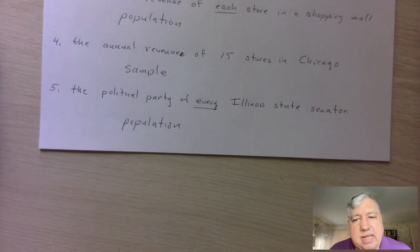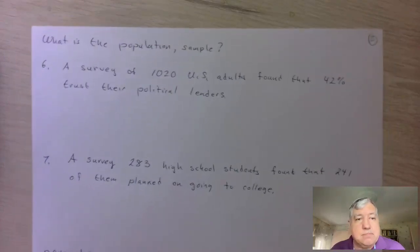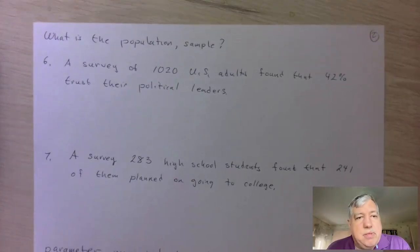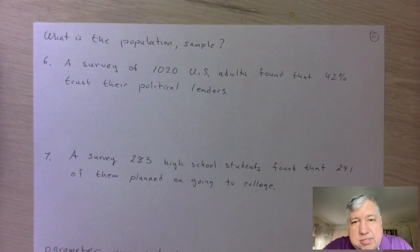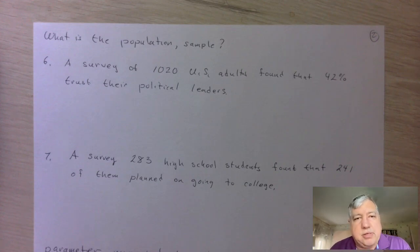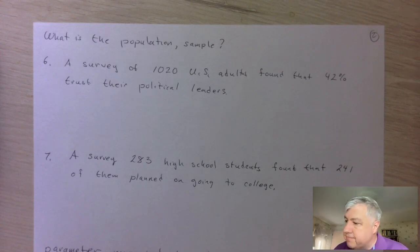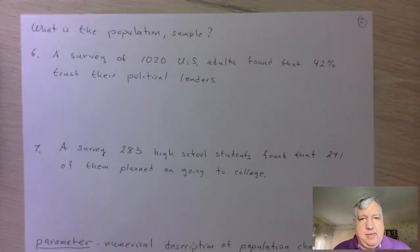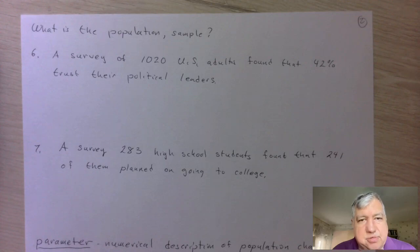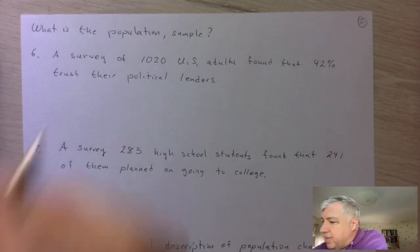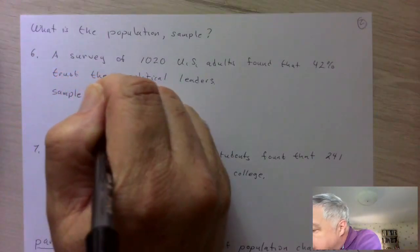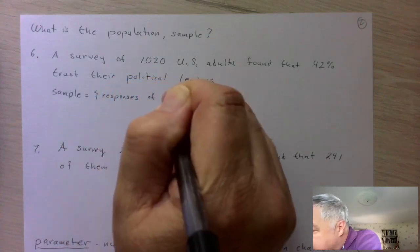Now, what is the population and what is the sample? In example six, a survey of 1,020 US adults found that 42% trust their political leaders. The sample is not simply the 1,020 adults themselves — the sample is the responses of those 1,020 adults to the question 'Do you trust your political leaders?'